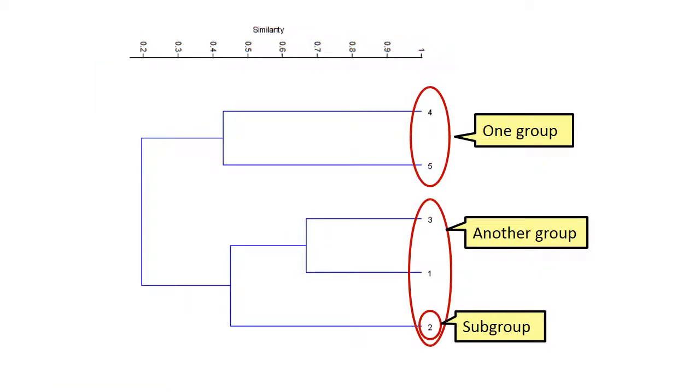It is often useful to mark the grouping relationships on the dendrogram. This helps highlight the groups. In our example, sites 4 and 5 make up one group. The other group consists of sites 1, 2, and 3. We can call site 2 a subgroup, as it is not quite as similar to sites 1 and 3 as these two sites are to each other.